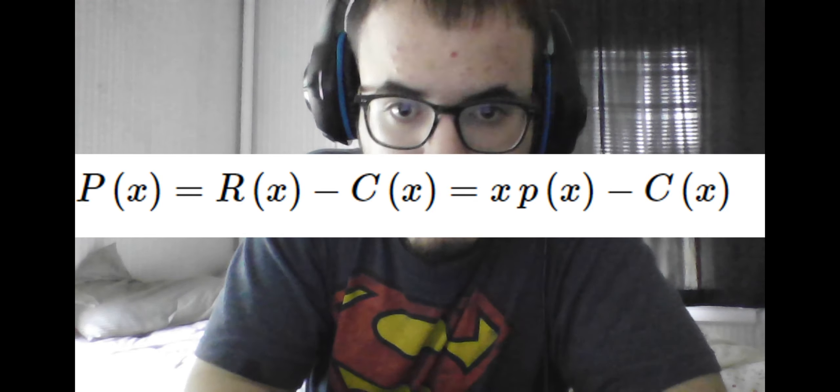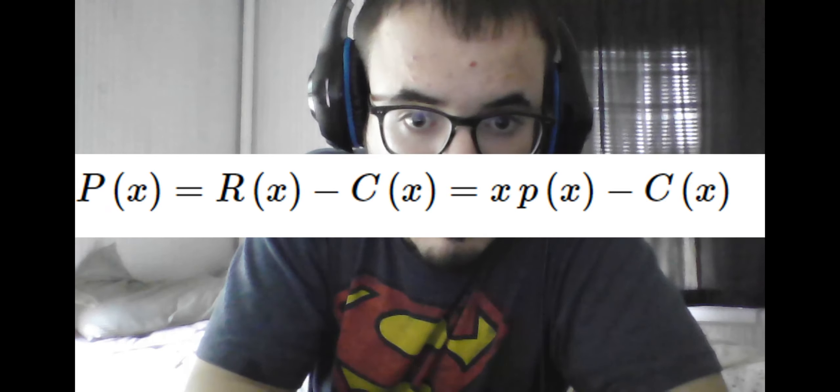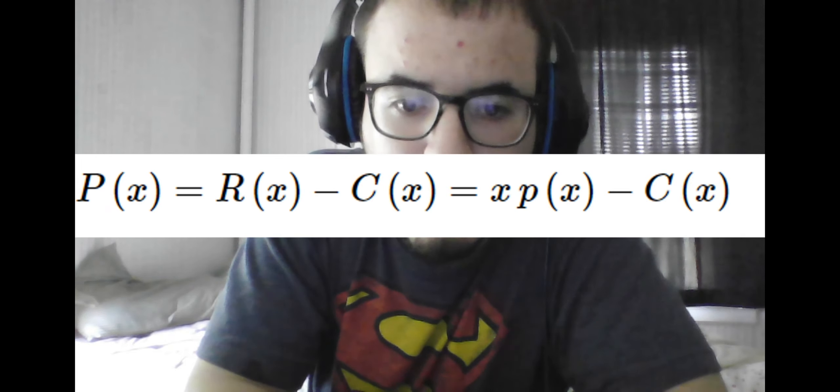For example, if we know the demand of a certain good is given by a constant value, then the revenue generated would be this demand times the number of goods sold, and then to find the overall profit we make, we subtract the overall cost from the overall revenue.